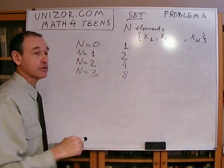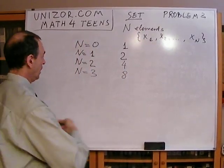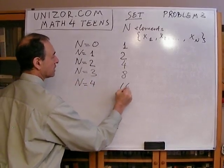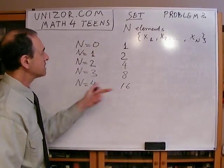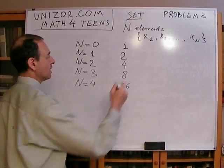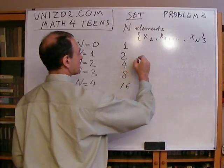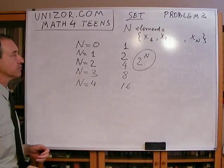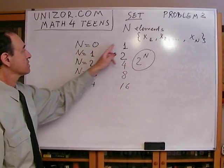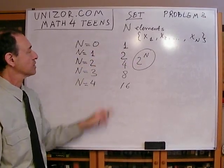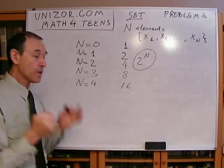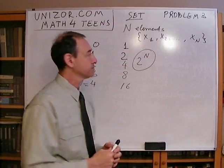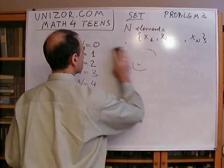Going back to problem number one, we had four elements and counted 16. Obviously you can see this is a sequence: 2^0=1, 2^1=2, 2^2=4, 2^3=8, etc. So we guessed the formula. Now the problem is to prove it.